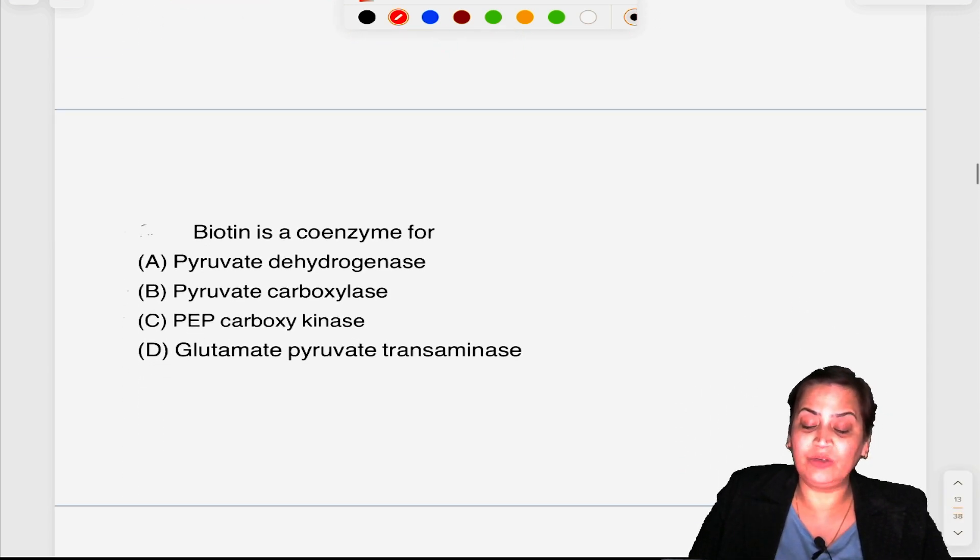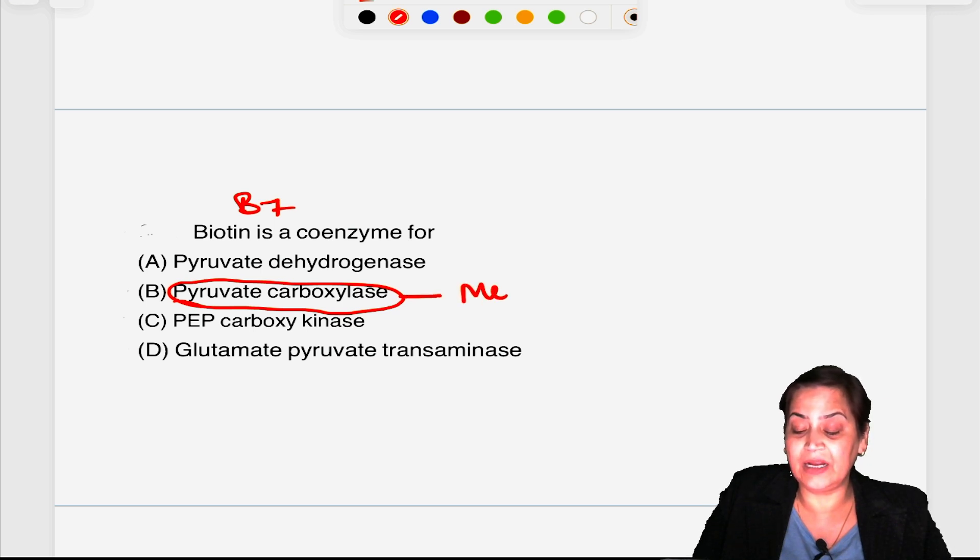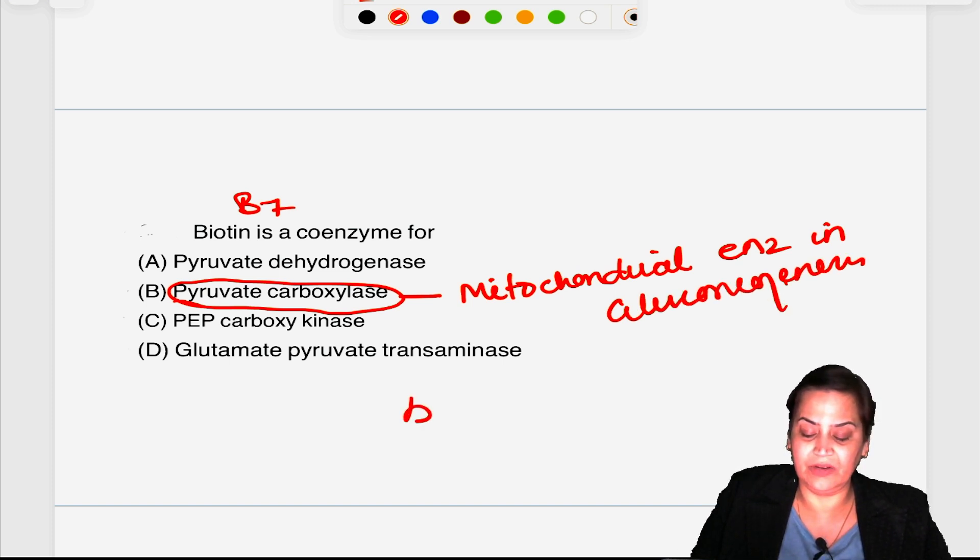Biotin is a coenzyme for? Again an FMGE question. Always remember biotin which is B7 is always required for carboxylation. Now you have to find out carboxylation. Enzyme will be pyruvate carboxylase which is a mitochondrial enzyme of gluconeogenesis.